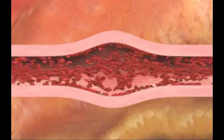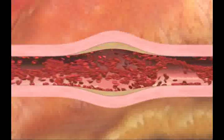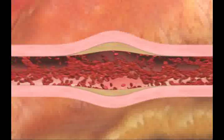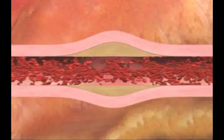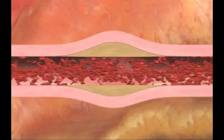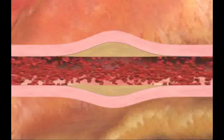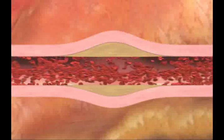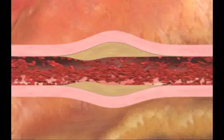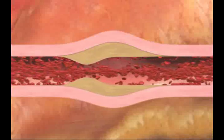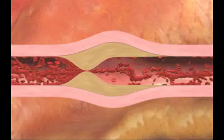In many cases, scar tissue will begin to form in the aneurysm over time, and the blood vessel will heal. However, the blood vessel is never again completely normal, and many years after Kawasaki disease, scarring could lead to narrowing of the vessel and again present a risk for heart attack.